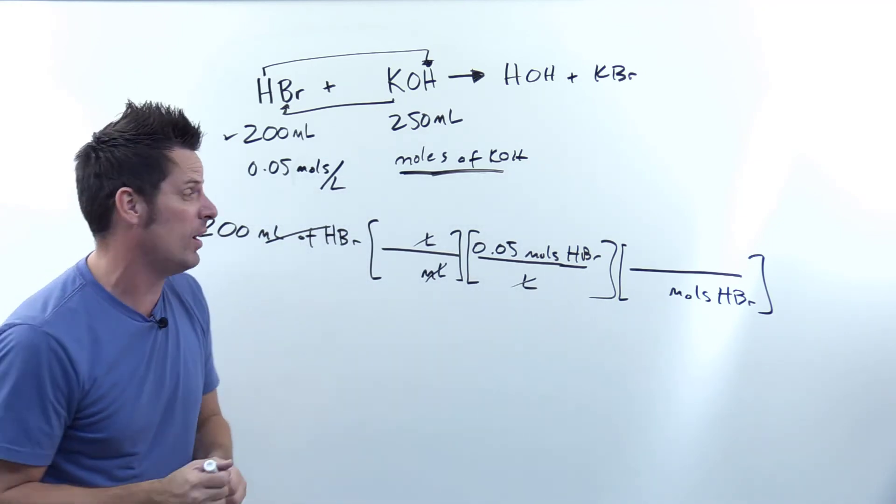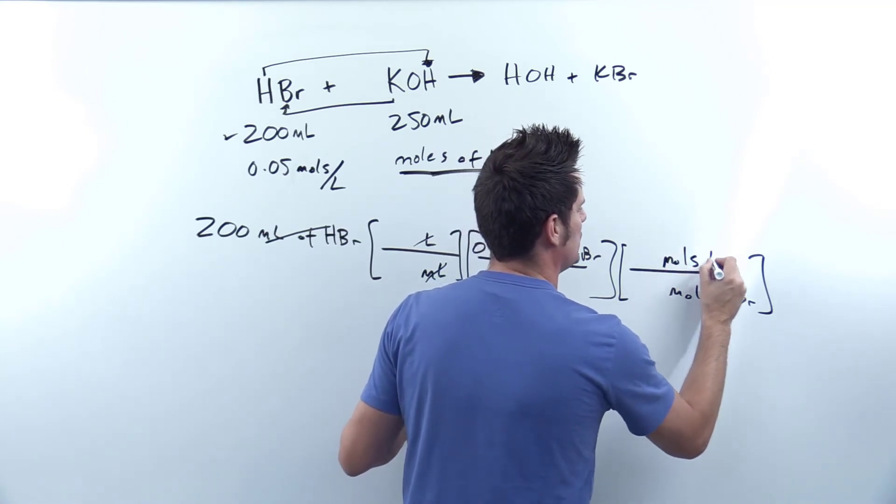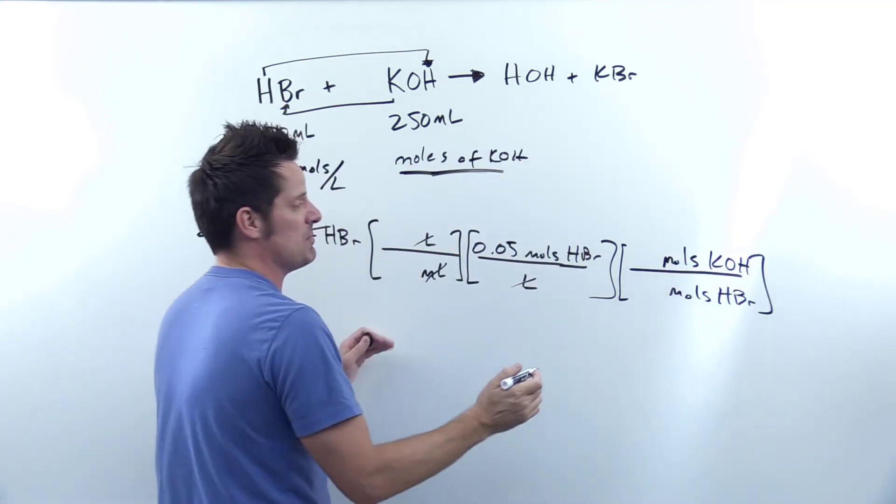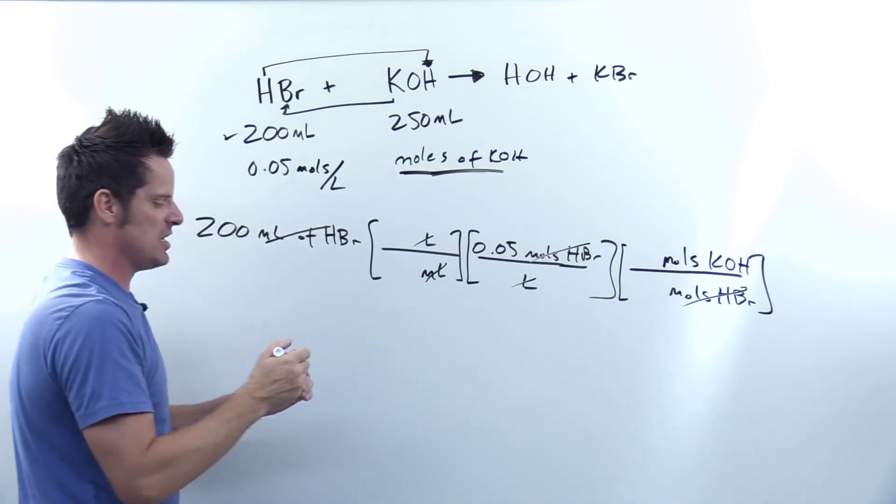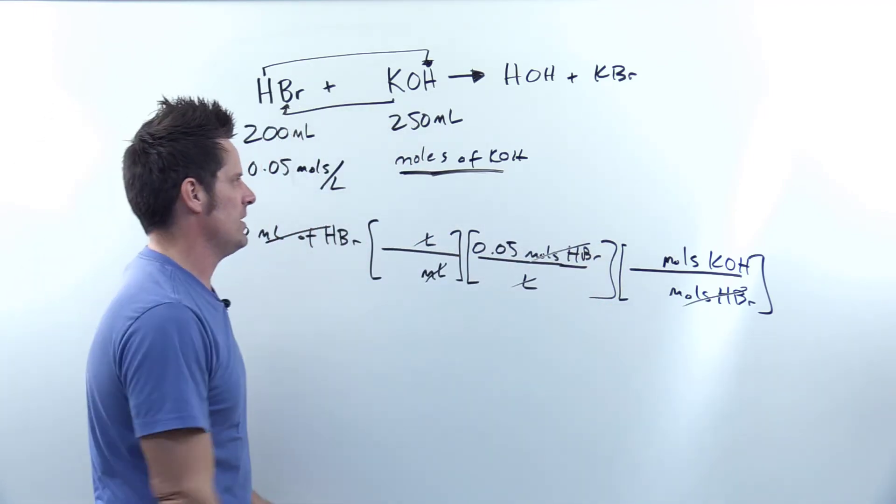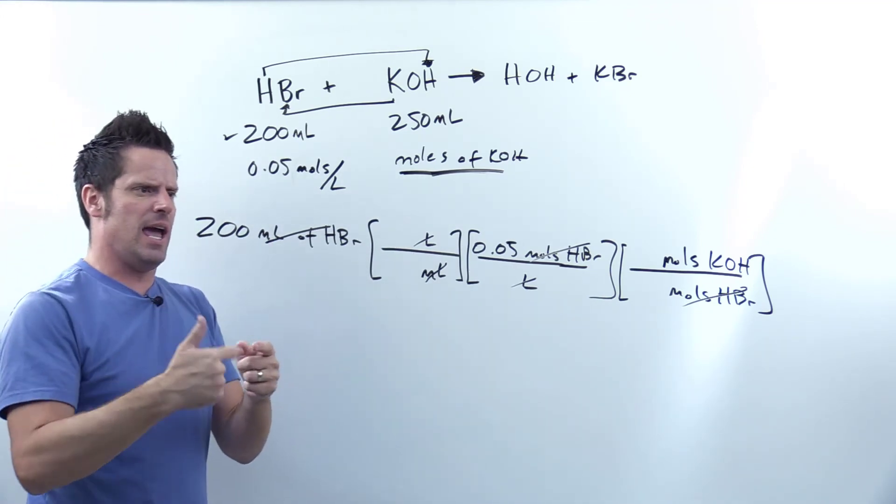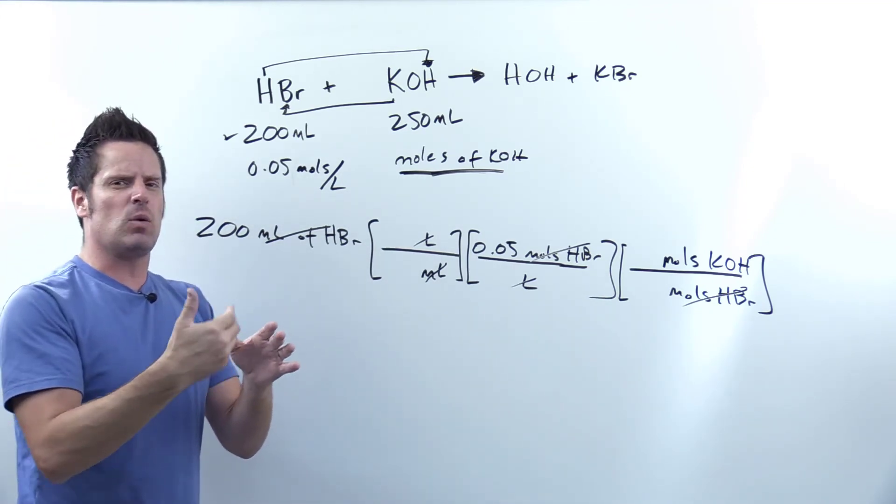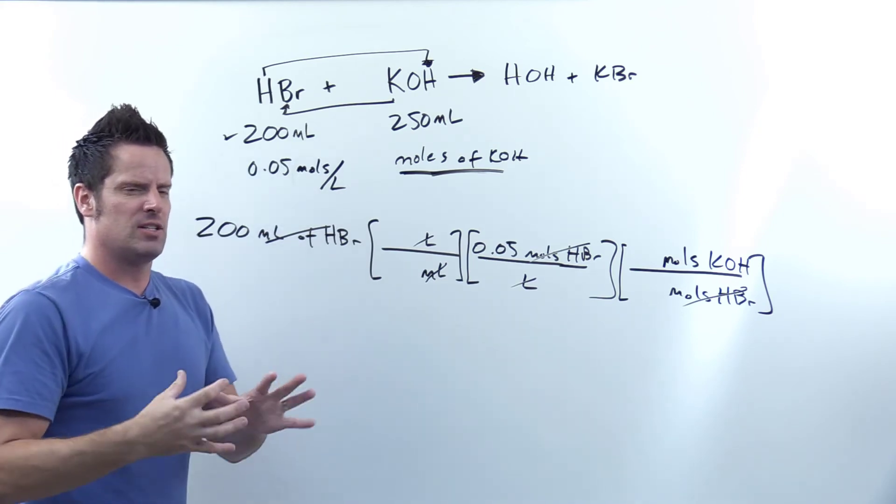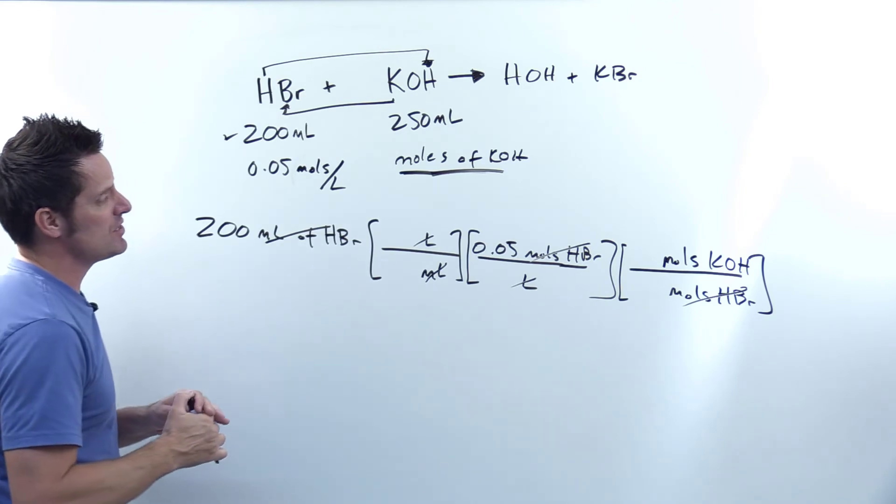So I can directly relate moles of HBr to moles of KOH. And then I'll insert the numbers in just a moment, but you'll notice that that takes me directly to the units that I'm trying to get to, my target or destination units, moles of KOH. And in this particular case, you did not have to use that equation, MAVANB equals NBMBVB. Sometimes you do, sometimes you don't, but I kind of like it this way. Now all I have to do is insert numbers.